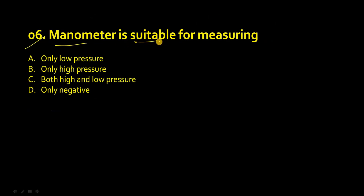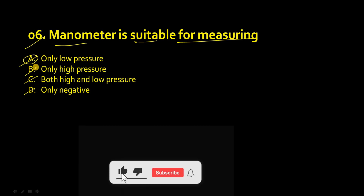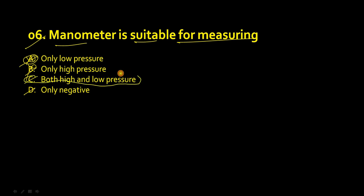The sixth question: a manometer is suitable for measuring only low pressure, only high pressure, both high and low pressure, or only negative pressure? The right answer is option C — both high and low pressure. It does measure negative pressure as well, but 'only negative' is not the right option. Whenever solving MCQs, first try to eliminate the other options to confirm your selected answer is correct.